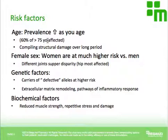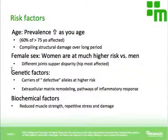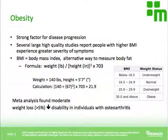Females are at much higher risk than males, though there's a disparity in which specific joints are affected. Genetic factors also play a role — some people can be carriers of so-called defective alleles. These defective alleles may include genes encoding proteins involved in extracellular matrix remodeling or certain pathways of inflammatory response, putting those individuals at higher risk of developing osteoarthritis. Lastly, biochemical factors such as reduced muscle strength and repetitive stress and damage to joints also contribute. Obesity is a strong risk factor for disease progression.